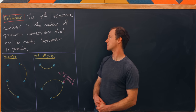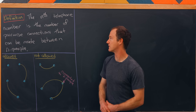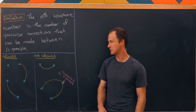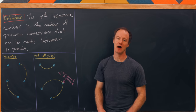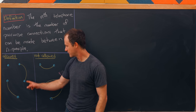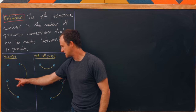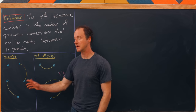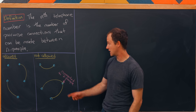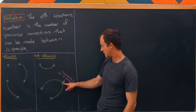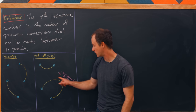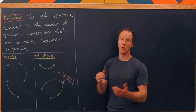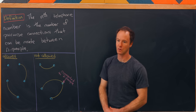We'll define the nth telephone number to be the number of pairwise connections that can be made between n people. Here we've got five people: these two are connected, and these two are connected; notice this person is not connected to anyone — that's allowed. But if a person is connected to two people, that is not allowed. Each individual can be connected to zero people or one person — that's what we mean by pairwise connections.